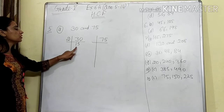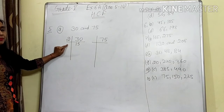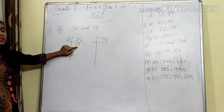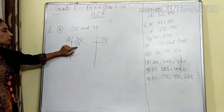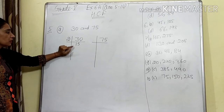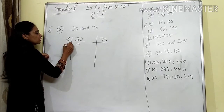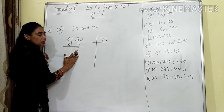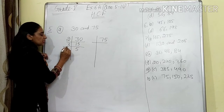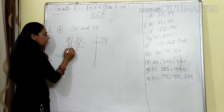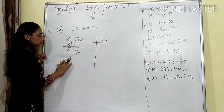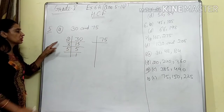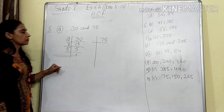Now 15 is not divisible by 2. We need to take the next prime number that will divide 15. 2 will not divide 15 because 15 is not in the table of 2. But in the table of 3 — and 3 is also a prime number — 3 fives are 15. Now 5 is a prime number that comes in the table of 5 only. These are the prime factors of 30.